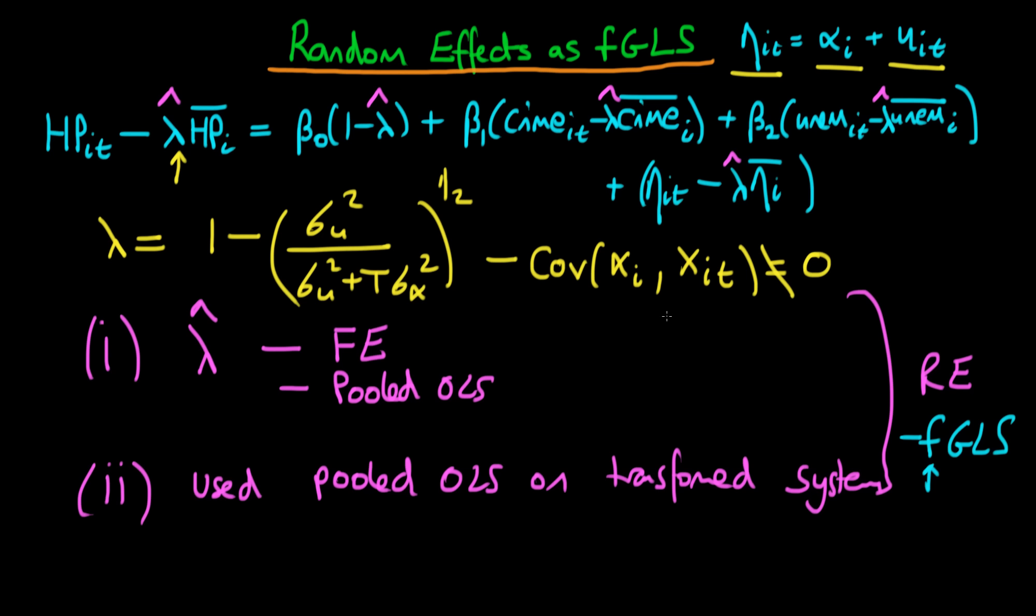Okay, so the first assumption is that the covariance between alpha_i and x_it is equal to zero, and in most cases that's where we sort of fall down with the assumptions of the random effects estimator.